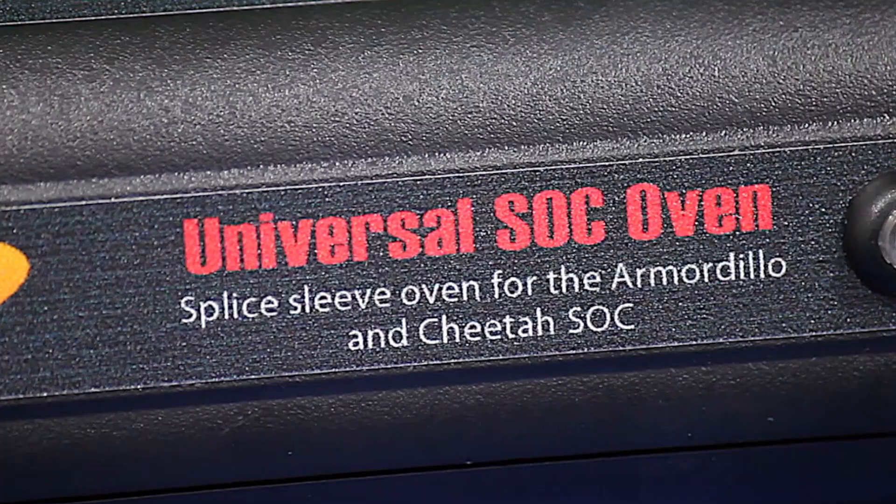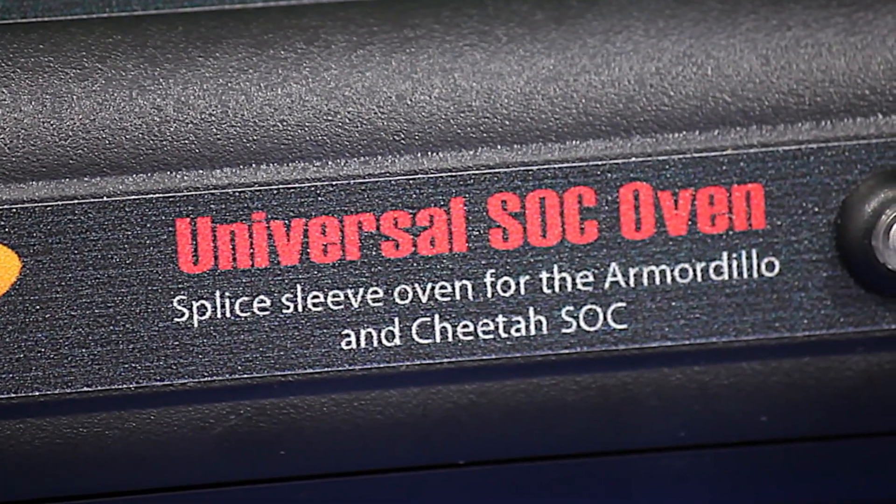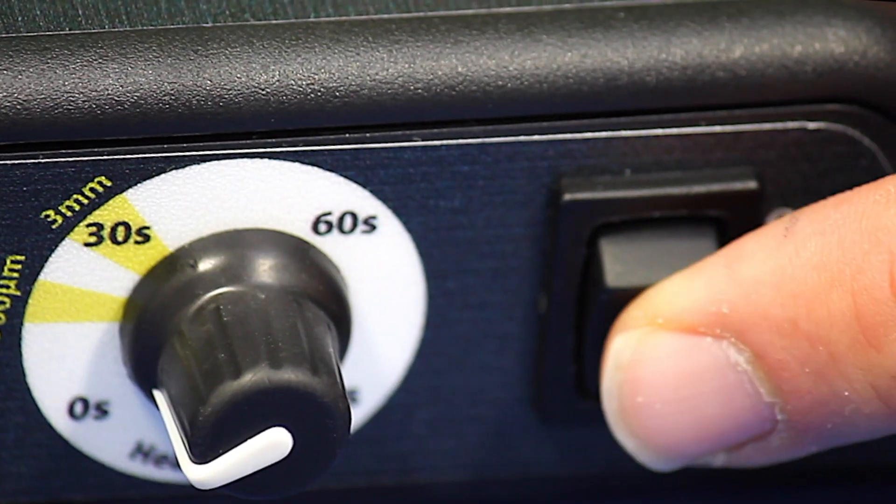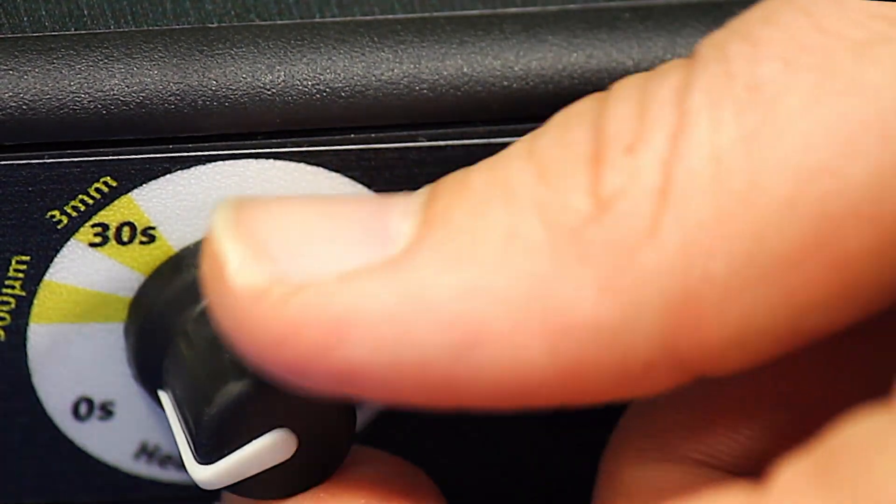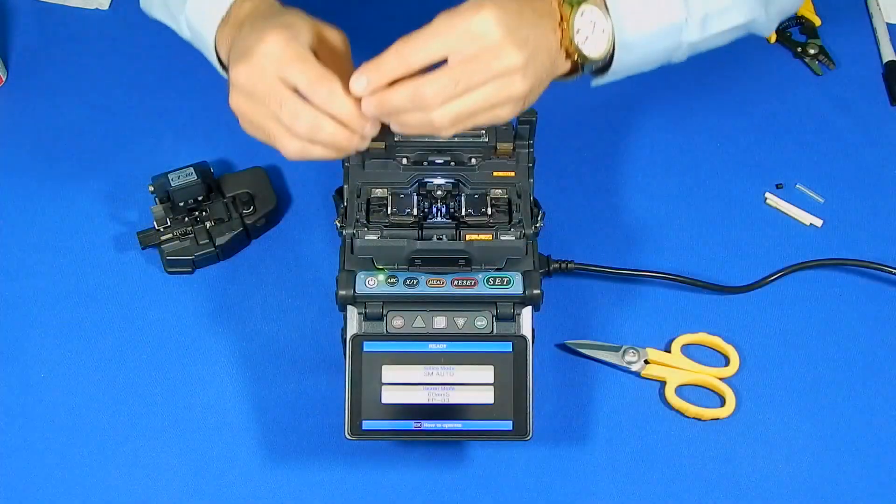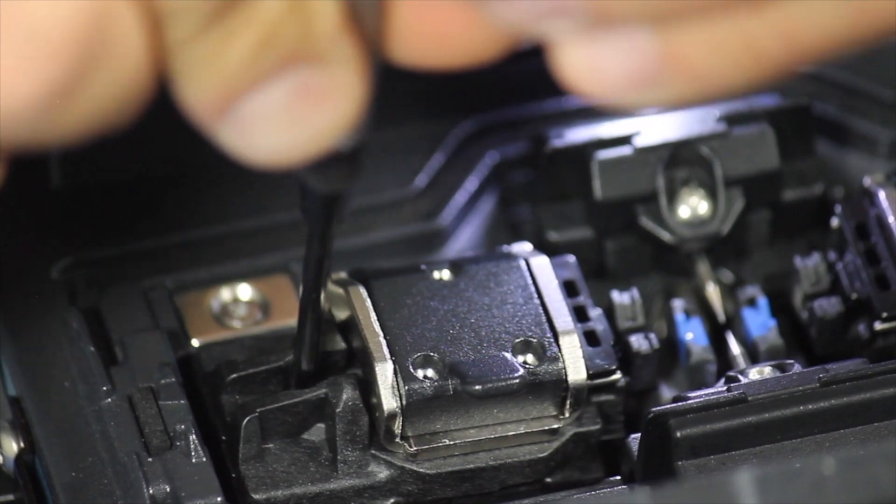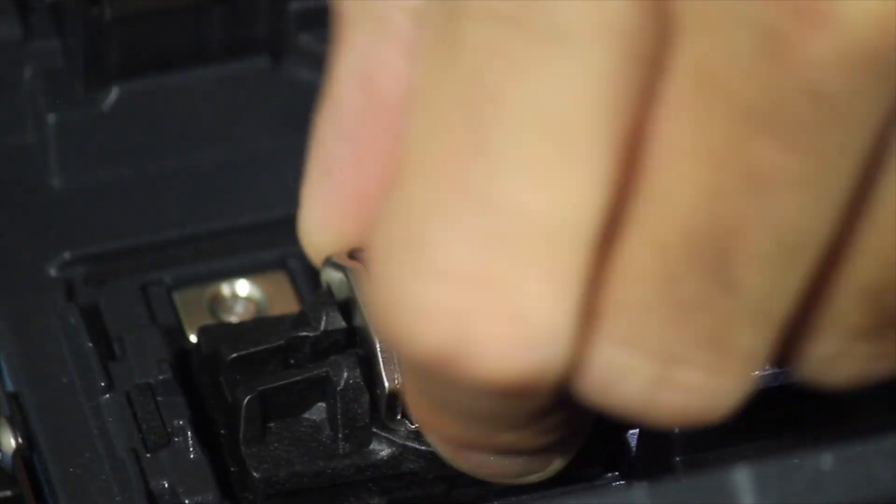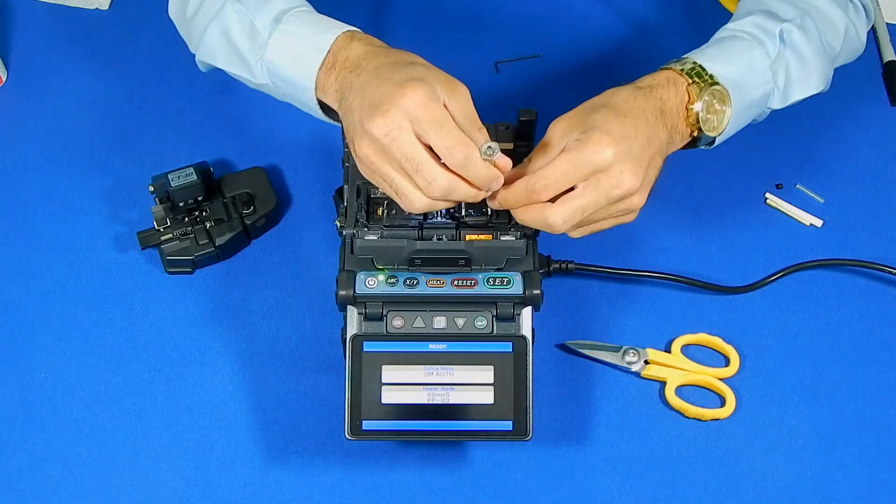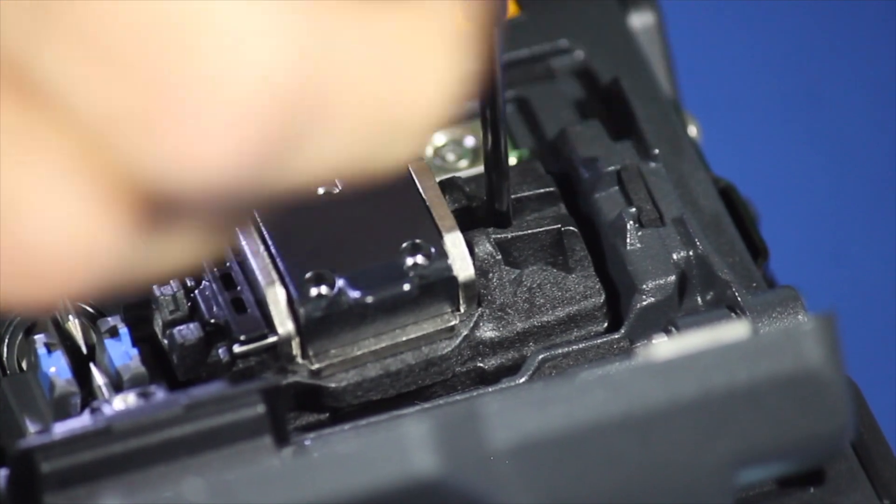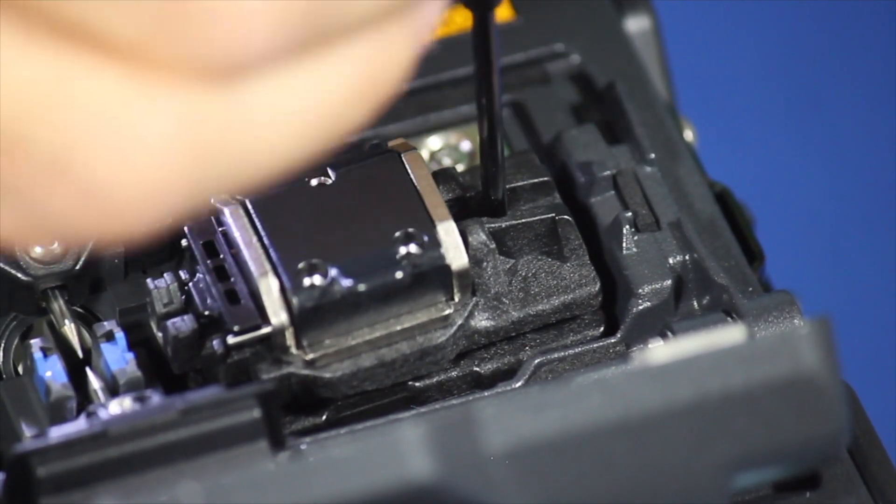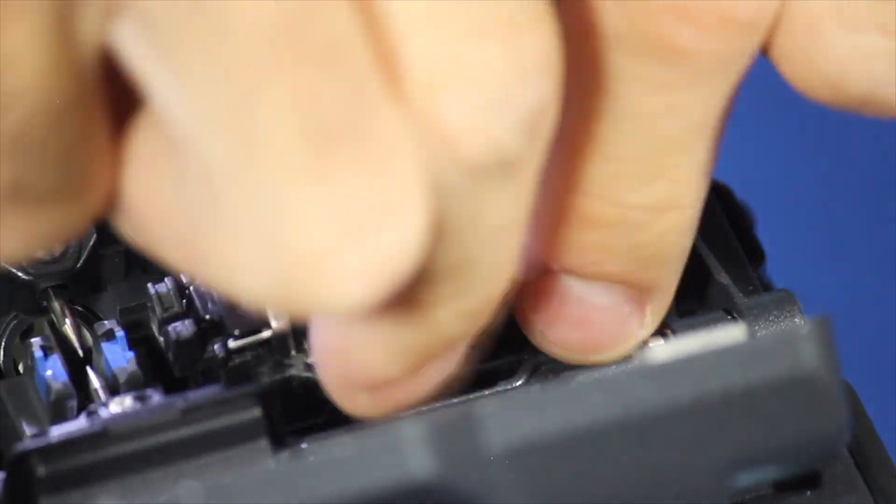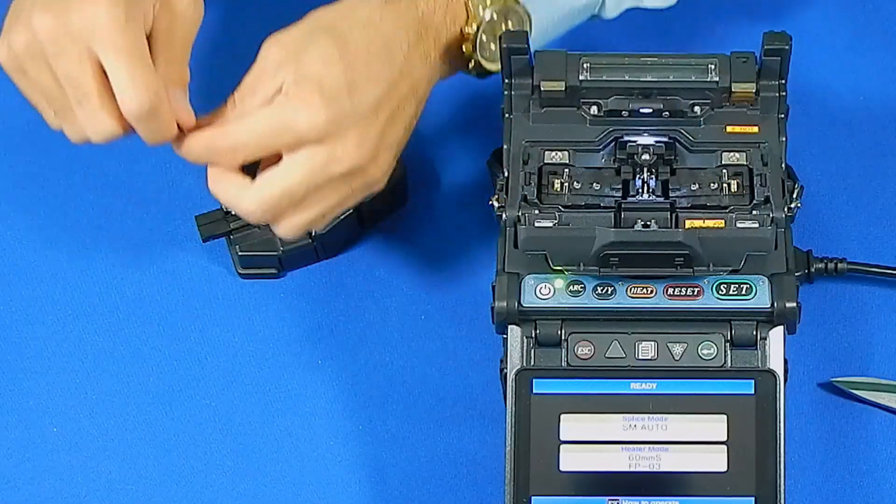Turn on the Universal SoC oven. Make sure the time is set to a 3mm splice-on connector, 30 seconds. Next, remove both fiber clamps from the splicer. Remove the alignment tool from the CT30 cleaver.